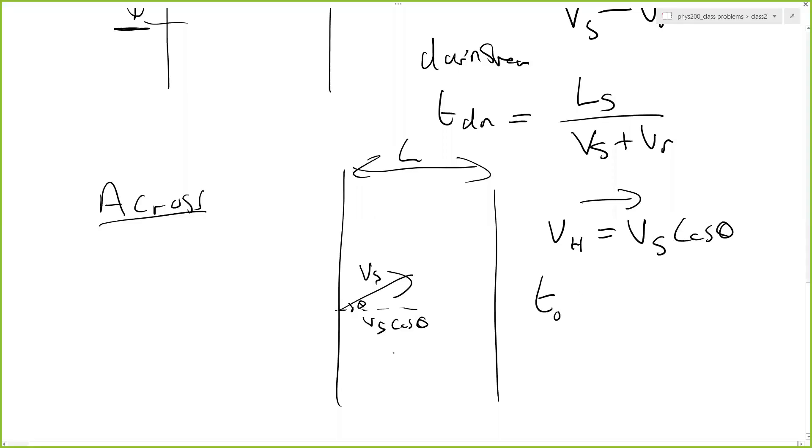So T, let's say, call that A, call that B. T from A to B is equal to L divided by Vs cosine theta. It's obviously the same on the way back. So B to A is also L divided by Vs cosine theta.